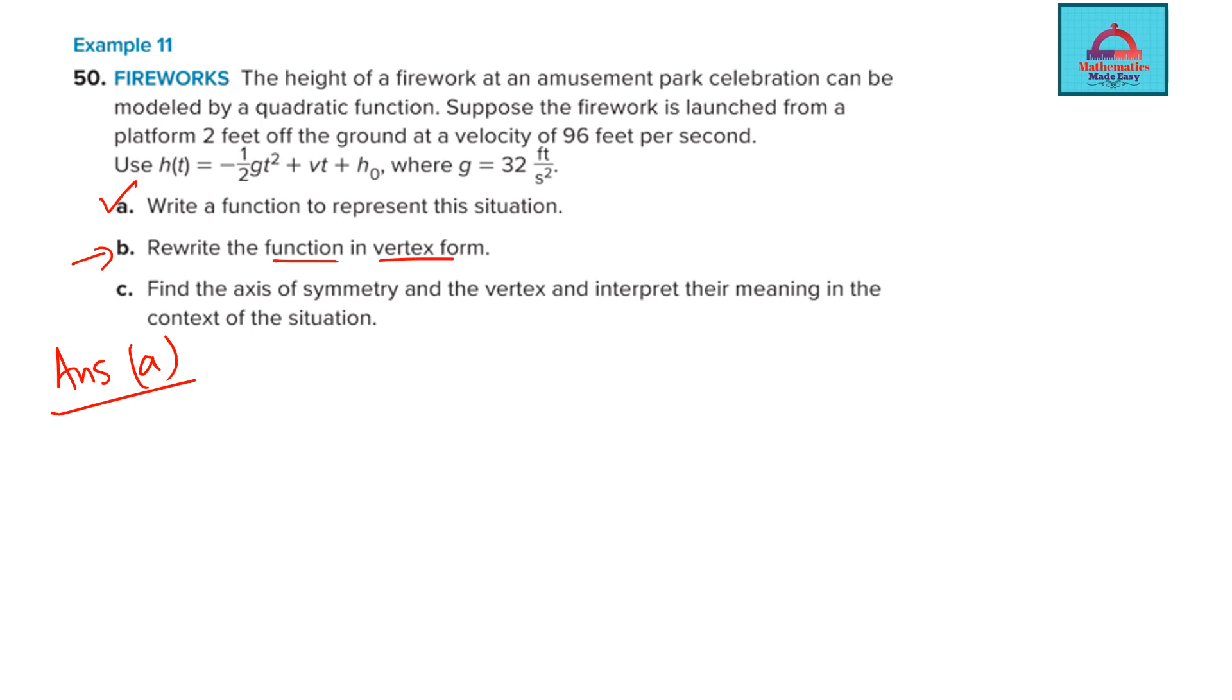I will just write first the function and then at part b, which is this part, we will convert it into vertex form. For doing that conversion, we will use the completing the square method. So I want you to pay attention very carefully how I am doing this. So first I write from part a, the equation of the function h(t).